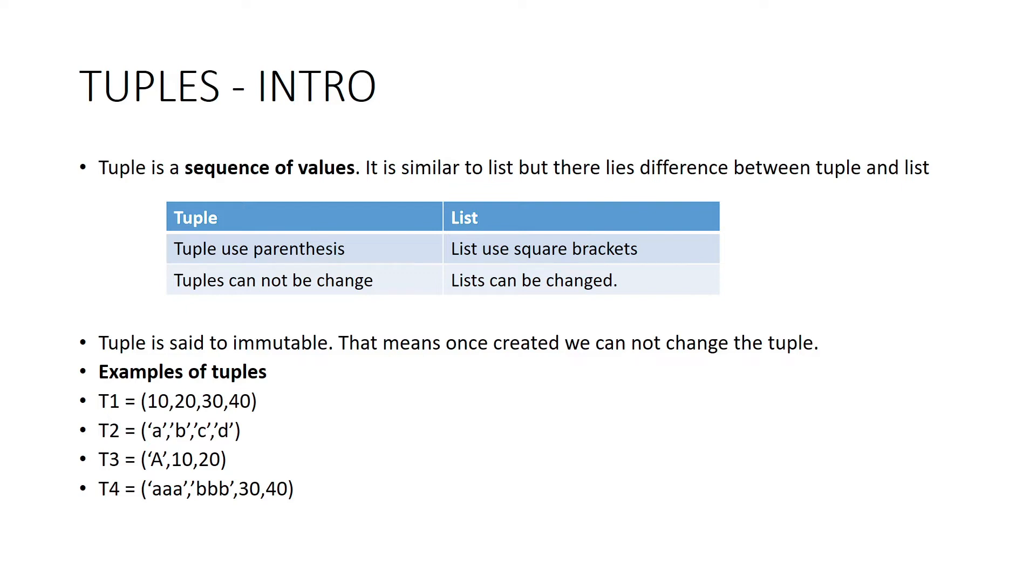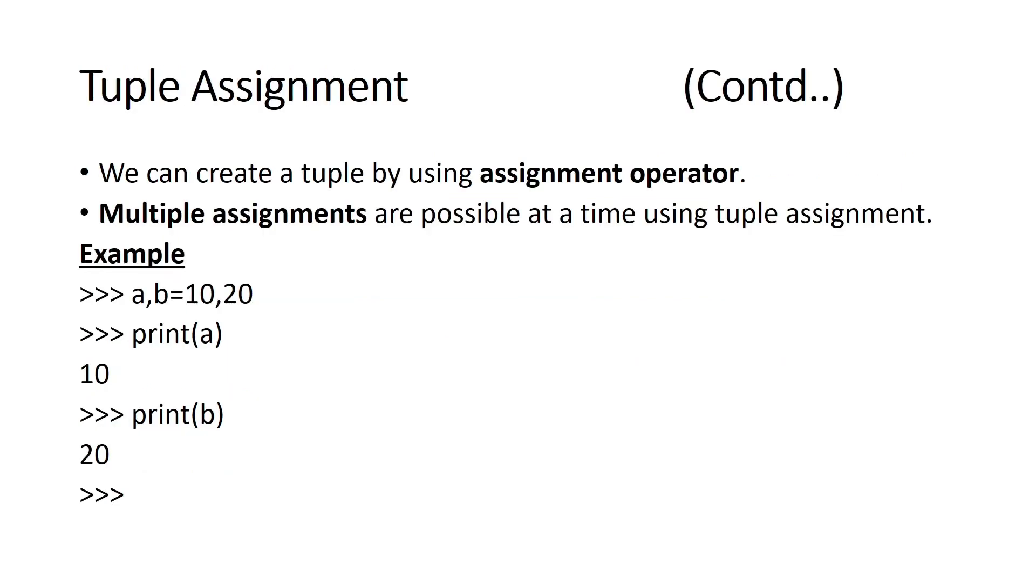Tuple assignment - assigning a value for a tuple is very important. Rather than assigning a complete set of elements, we can directly assign values. Single assignment: a, b equals 10, 20. When we assign this, a equals 10 and b equals 20. The Python program automatically controls this in the tuple.